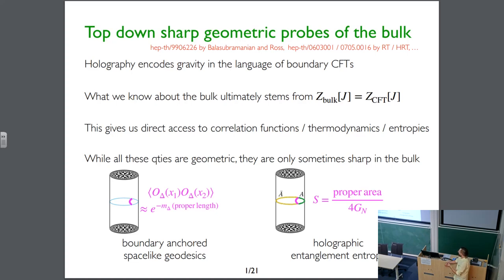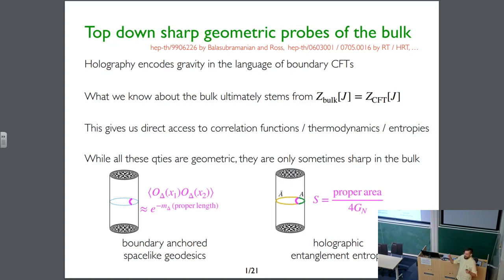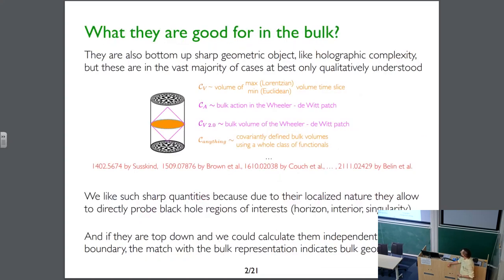While all these quantities are geometric by definition — everything in holography on the bulk side should be geometric — they are only sometimes sharp in the bulk. In particular, a two-point function of a heavy operator on a time slice can be approximated as an exponent of the geodesic length, which probes the bulk sharply. Similarly, a subsystem on a constant time slice has its entanglement entropy calculated via the RT-HRT formula, and that's also a sharp quantity.